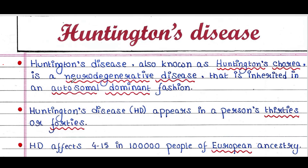It is a neurodegenerative disease that is inherited in an autosomal dominant fashion. That means the gene responsible for Huntington's disease is present in one of the autosomes, and it is a mutation which causes this disease. In order to cause the disease, only one mutant allele is enough, since it is a dominant mutation.